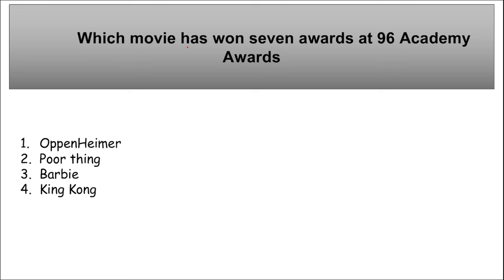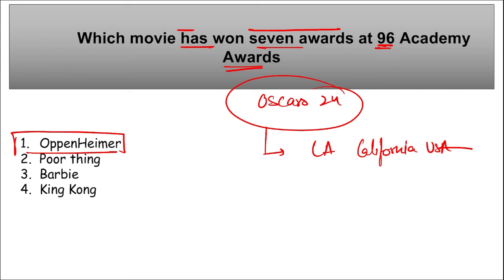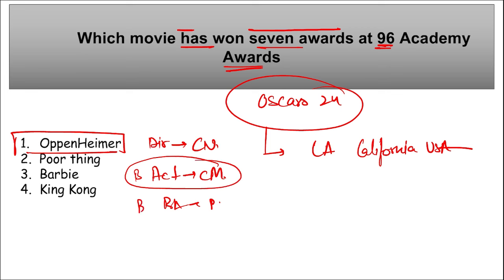Oppenheimer won seven awards at the 96th Academy Awards (Oscars 2024), held in Los Angeles, California. The film was directed by Christopher Nolan. Cillian Murphy won Best Actor, and Robert Downey Jr. won Best Supporting Actor.